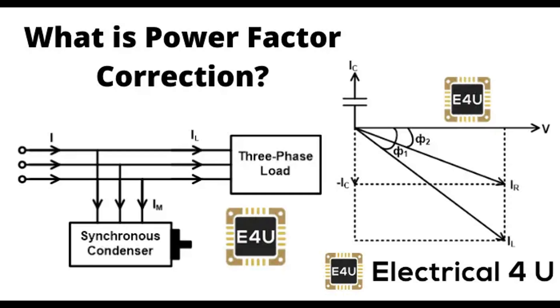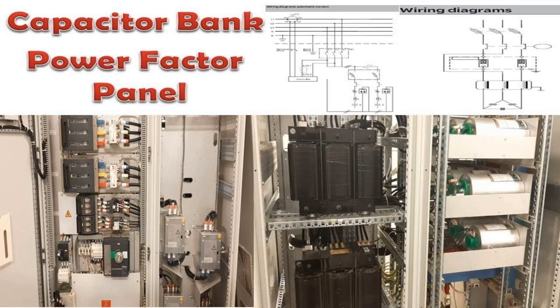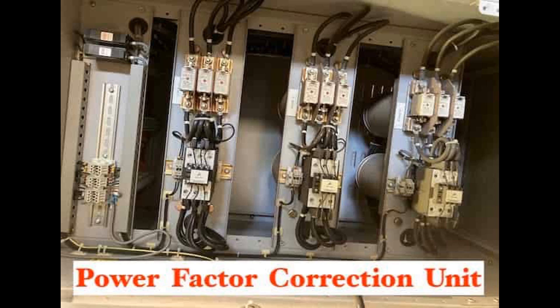Filter capacitors, also known as power line filter capacitors or EMC/EMI filter capacitors, are used in electrical systems to reduce electromagnetic interference (EMI) and radio frequency interference (RFI). Filter capacitors are designed to suppress unwanted electromagnetic and radio frequency interference generated by electrical equipment and systems.